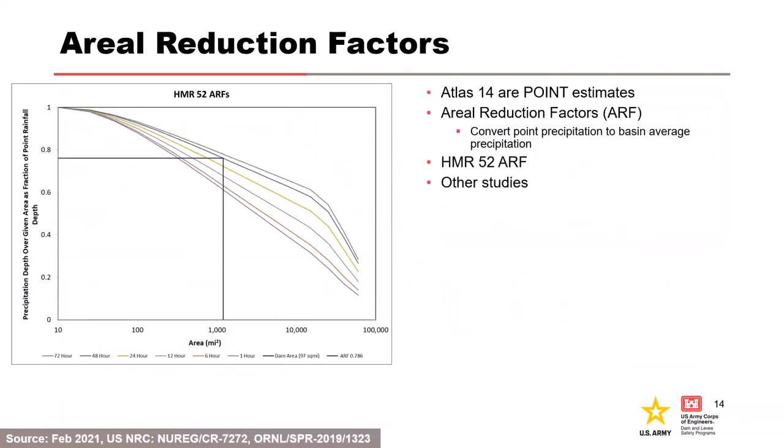Most precipitation frequency studies are going to be point rainfall data. We can't apply a point rainfall to our watersheds for the rainfall-runoff process — it needs to be converted to the watershed size. You can't take a single point depth and apply it to some area, and calculating the point depth for every point in your watershed is too much effort. So it's a simpler process of taking the point and reducing it for the aerial size you're looking at.